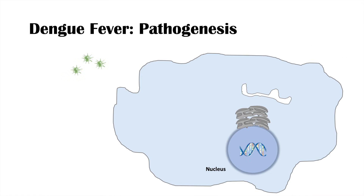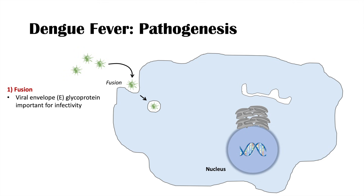What is the pathogenesis of dengue fever? Once a mosquito bites us, the viruses can fuse with a host cell. Some theories suggest these host cells are the Langerhans cells in our skin, which are immune cells. The dengue virus fuses with and enters the cell, mediated by the viral envelope E-glycoprotein, which is important for infectivity.